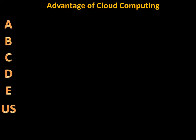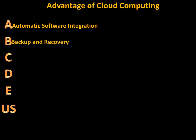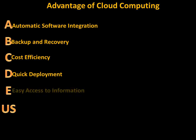Here is the second memory technique for the same question: A, B, C, D, E in US. A — Automatic software integration. B — Backup and recovery. C — Cost efficiency. D — Deployment (quick). E — Easy access to information. U — Unlimited storage. These are the advantages of cloud computing.